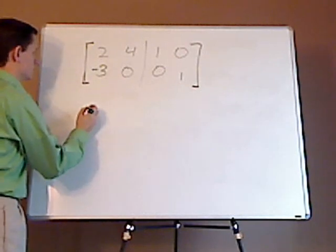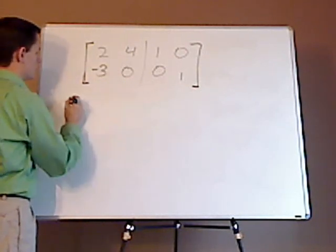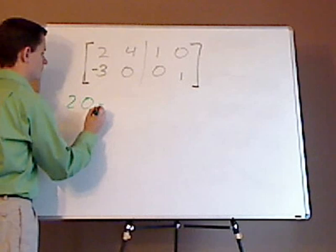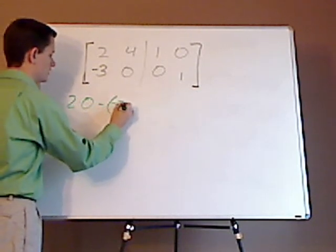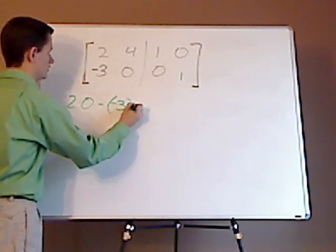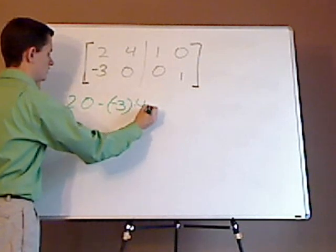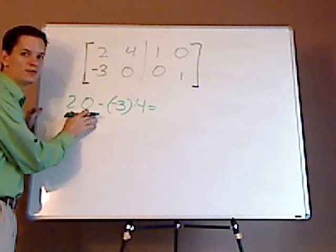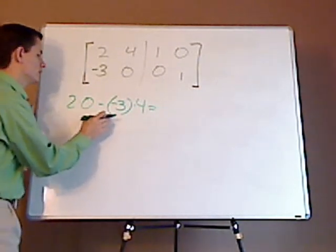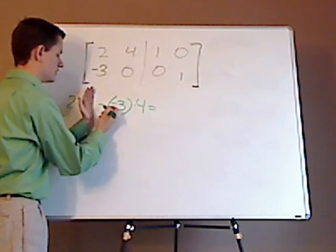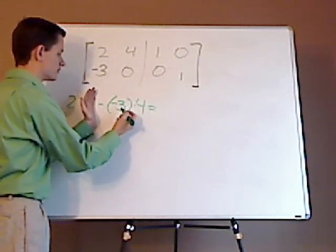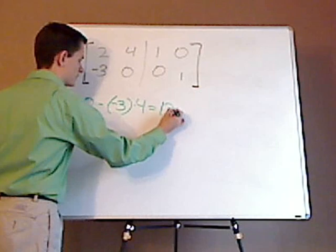So first find the determinant. You have two times zero minus a negative three times four. When you do this, two times zero is zero. Then you have this, a negative negative makes it a plus, so it's three times four which makes it a positive twelve.